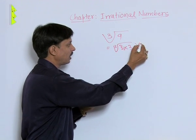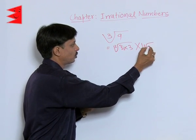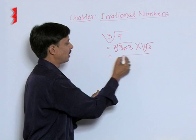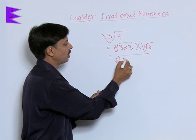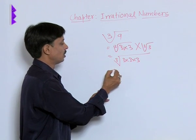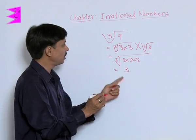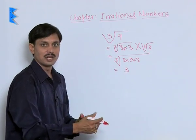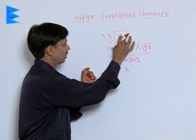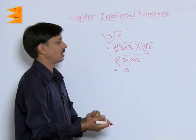If I multiply it by cube root of 3, this will give me cube root of 3 into 3 into 3. This gives us the final answer as 3. We get a number which is rational.